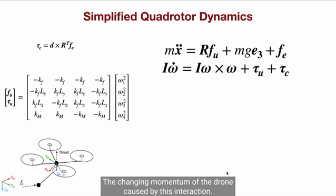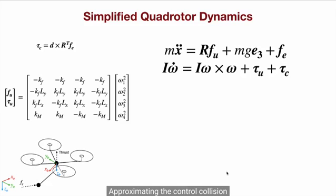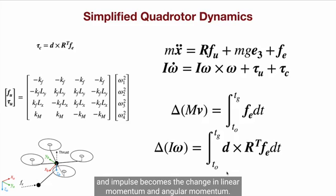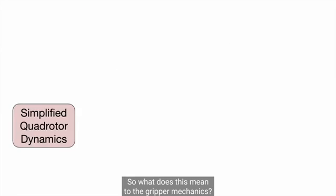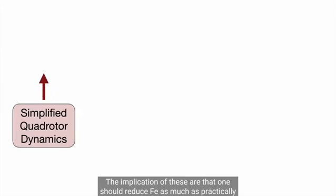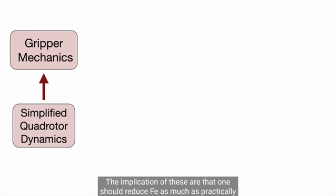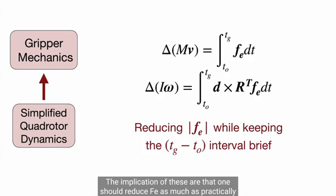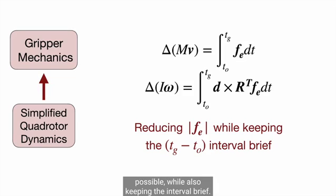The change in momentum of the drone caused by this interaction, approximating the collision as an impulse, becomes the change in linear momentum and angular momentum. So what does this mean to the gripper mechanics? The implications are that one should reduce Fe as much as practically possible, while also keeping the interval brief.